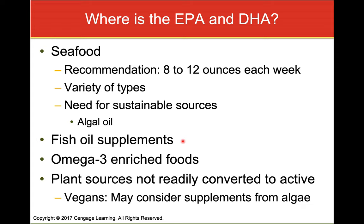EPA and DHA can also be obtained from fish oil supplements and omega-3 enriched or fortified foods — for example, omega-3s being added to bread where they're not typically found. For vegans who consume no animal products, algal supplements are worth considering, since flaxseed oil provides the parent omega-3 but not good conversion to the EPA and DHA that we really want.